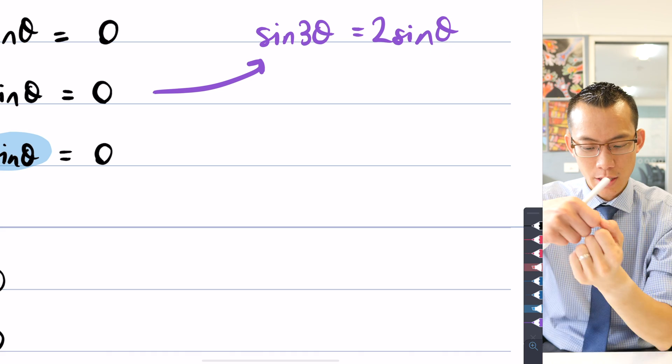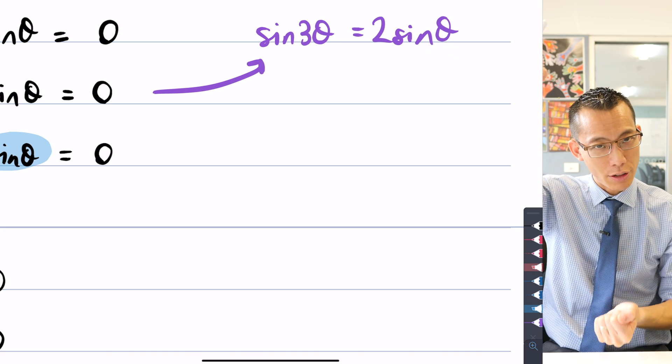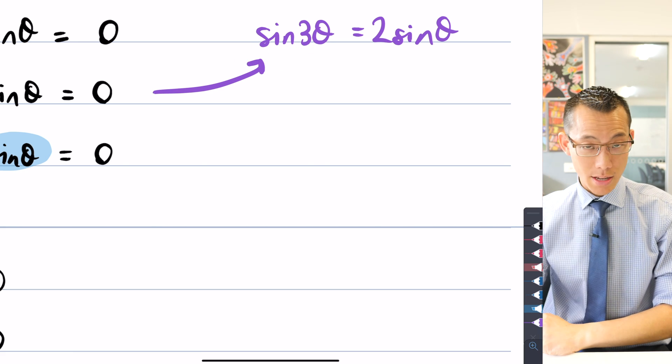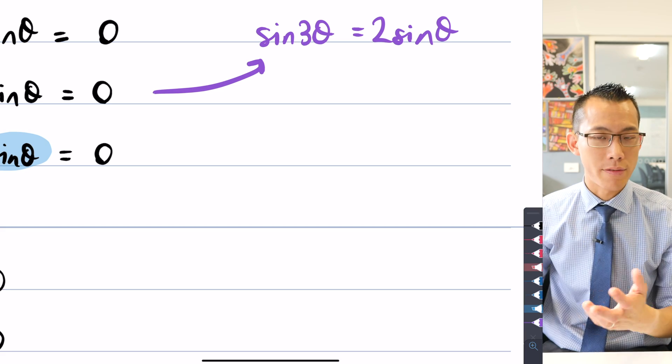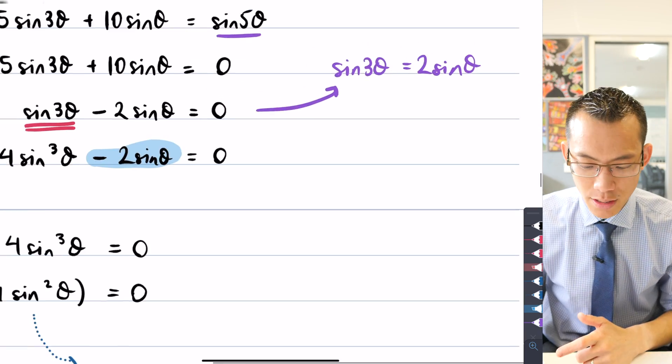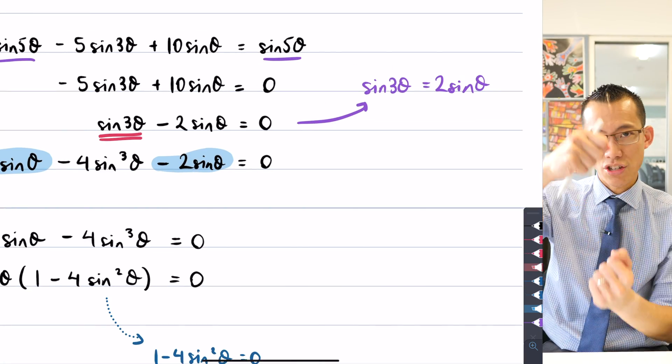Before we actually graph this, have a think about what these two things are going to look like. If you think about 2 sinθ, it's a regular sine curve, but its amplitude has been increased to 2. And then sin 3θ, it's like the same sinθ function, but it's much more frequent. It's triple as frequent. You're going to get three copies of the entire period from 0 to 2π.